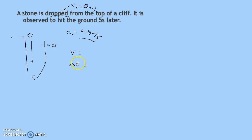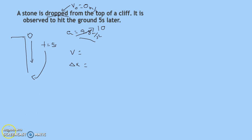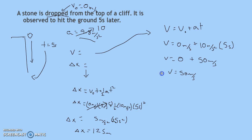From here we can solve for final velocity and displacement. You can use any of the equations. Let's round 9.8 to 10 to make this process a little bit simpler. We calculate those missing quantities and find the velocity at the end is 50 meters per second, and we've traveled 125 meters.